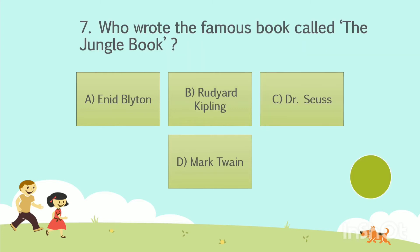Shall we go to the next question? Question number 7. Who wrote the famous book called The Jungle Book? Option A: Enid Blyton. Option B: Rudyard Kipling. Option C: Dr. Seuss. Option D: Mark Twain. Your time starts now. The answer is Option B, Rudyard Kipling.